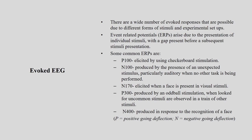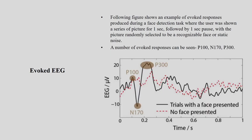N170 is elicited when a face is present in visual stimuli. P300 is produced by oddball stimulation when uncommon stimuli are observed in a train of other stimuli. N400 is produced in response to the recognition of a face. These are commonly available examples; you can also define your own categories based on your experiment.